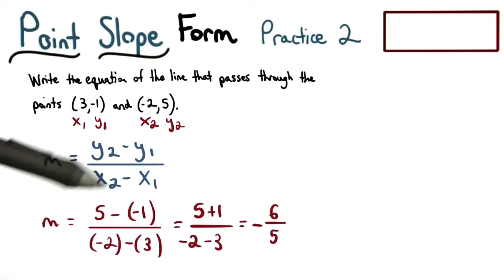For y2, I plug in 5. For y1, I plug in negative 1. And for x2, I plug in negative 2. And finally, for x1, we plug in 3.